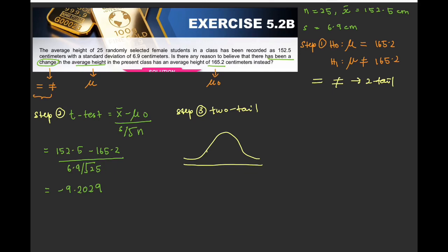Because of 2 tail. You will have 2 shaded regions. Here is negative. Here is positive. So T alpha over 2 because of 2 tail and the nu. So T alpha is not given. So by default alpha is 0.05. So T 0.05 divide by 2. Nu is n minus 1. So you will get T 0.025. Our n is 25 minus 1 is 24.